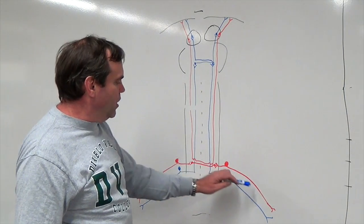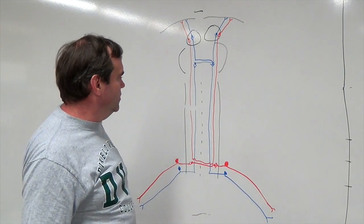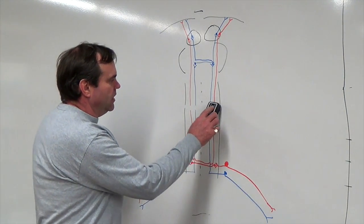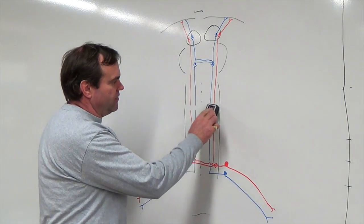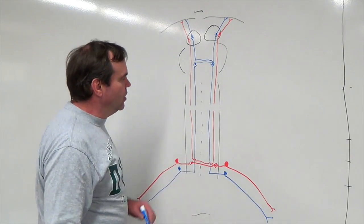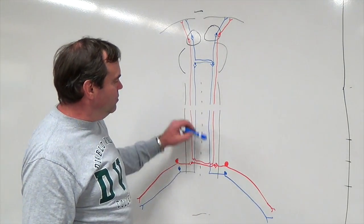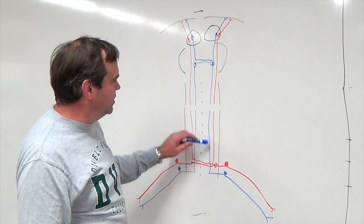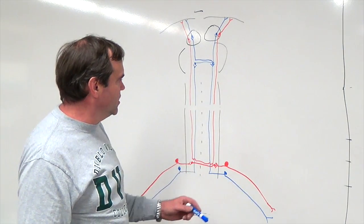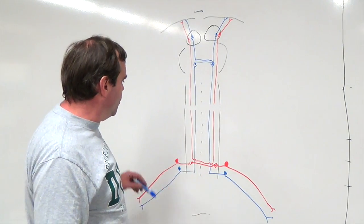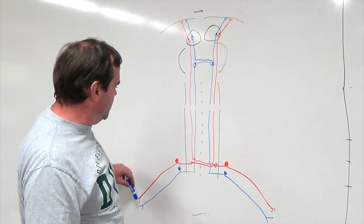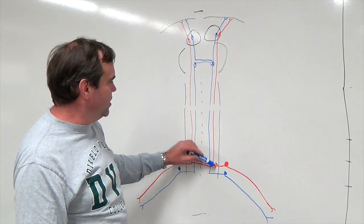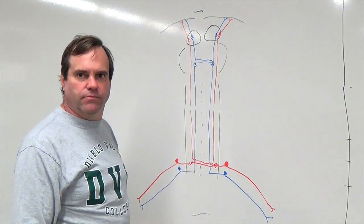The same is true if we cut through the left side. We're going to lose conscious proprioception, light touch, and fine pressure on the left side, but we're going to lose tickle, deep touch, and crude pressure from the right side.